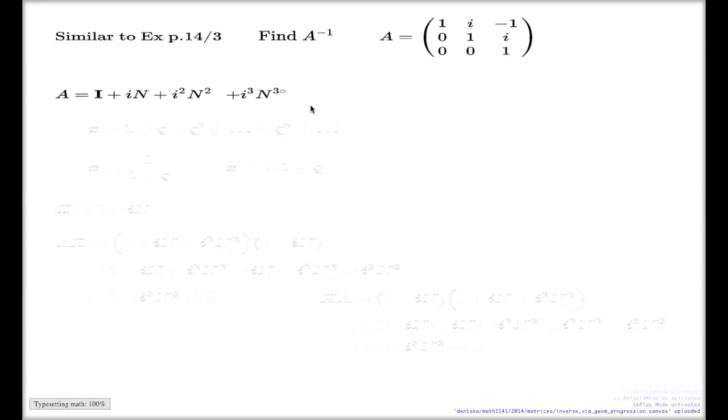I can continue this line indefinitely because all of these powers of N are zeros, so by adding them I don't change anything. But by adding them I can identify some pattern here. This is a sum of the powers of some fixed matrix. It's a geometric progression formula.